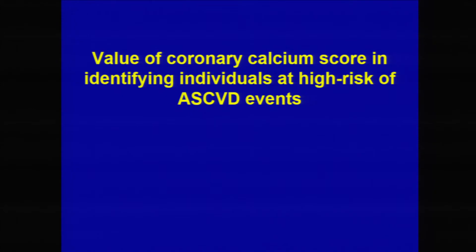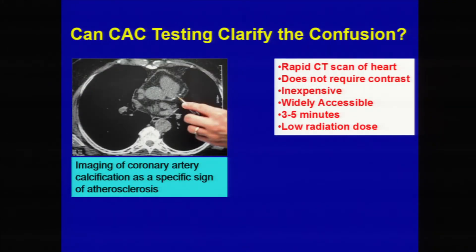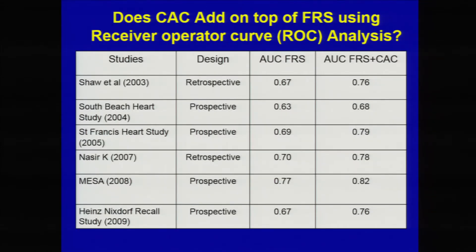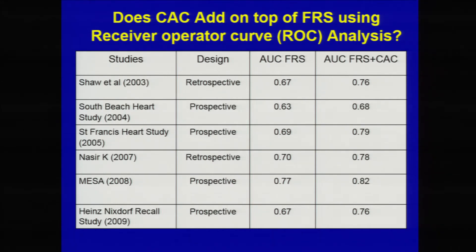Now switching gears to the second imaging test, which is extremely important in risk stratification: the coronary calcium score. It's a very quick scan of the heart, widely available, doesn't take much time, has minimal radiation, and is fairly inexpensive these days. Going to the same theme — does it help in discrimination? These are all the AUCs with traditional risk factors for the major studies, and when you add coronary calcium score, the improvement in discrimination is much, much higher compared to the numbers I showed for carotid IMT, allowing you to discriminate between those who will have an event versus those who won't, on top of traditional risk factors.